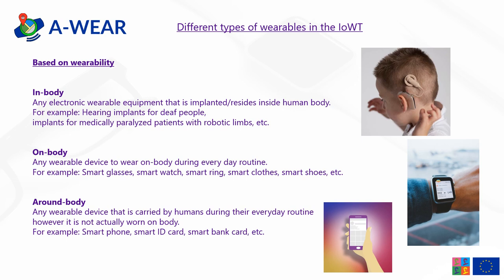Whereas the on-body wearable devices are all those devices which can be worn on the human body during everyday routine. For example, the smartwatch, smart ring or smart shoes.